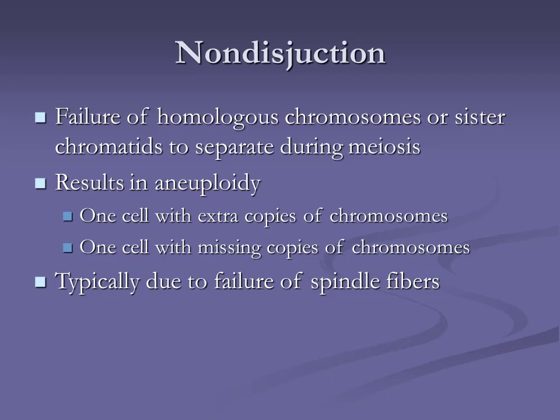At either of our metaphases, if we have a situation where we do not move one of our homologous chromosome pairs, or if we do not separate the sister chromatids in meiosis II, we have something called non-disjunction. If we have non-disjunction, it's going to result in a change in our ploidy. Diploid means two copies of each chromosome; haploid means one copy. With non-disjunction, you get a daughter cell with too many chromosomes — that's called polyploidy.